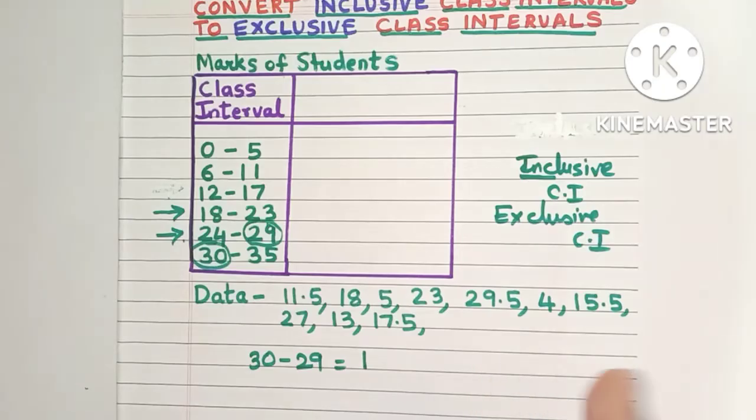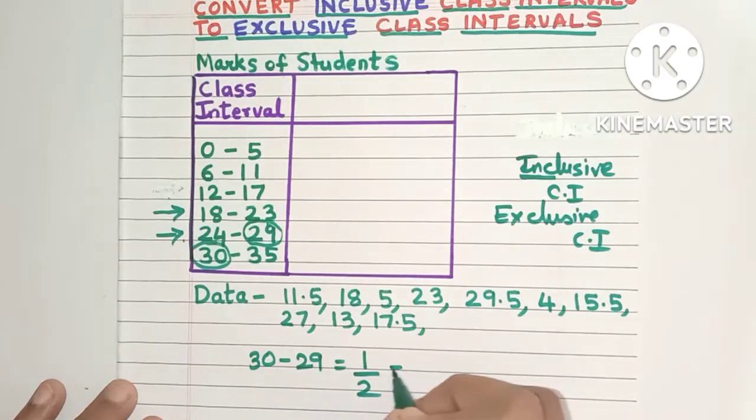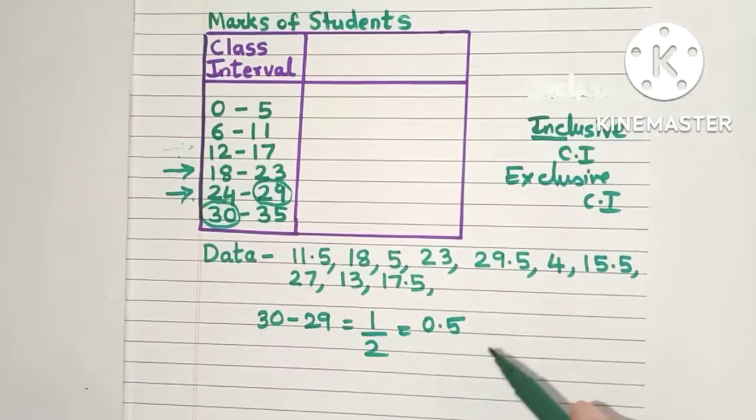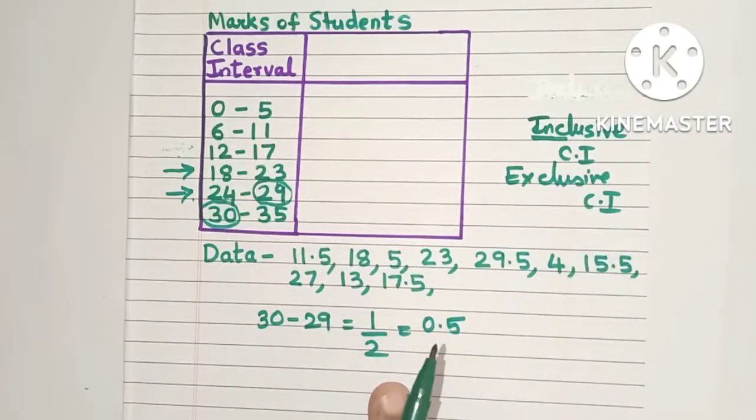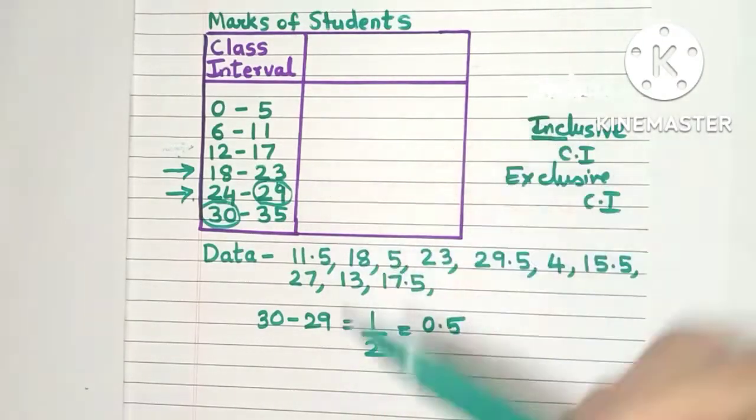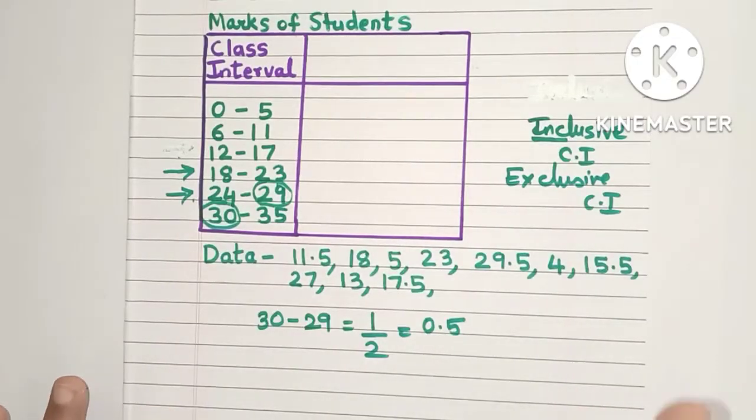So mostly the difference will be 1 or less than 1. Now this difference you divide it by 2. So you'll get 0.5. Now all you need to do is subtract the 0.5 from each of these lower limits and add the 0.5 to each of the upper limits. So it's very simple. Let's try it out.